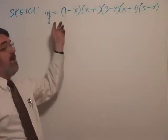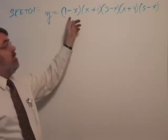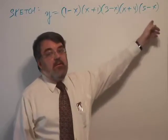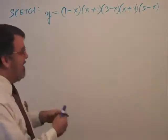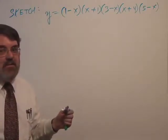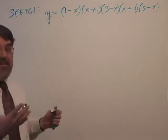Here we go. Sketch y equals (1 minus x)(x plus 1)(3 minus x)(x plus 4)(5 minus x). If I were to multiply this out, do you see what degree it is, incidentally? It's going to be fifth degree, isn't it? Because I have five of these linear terms.